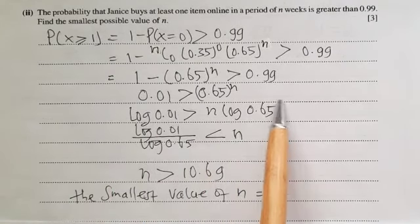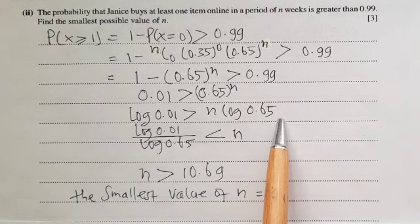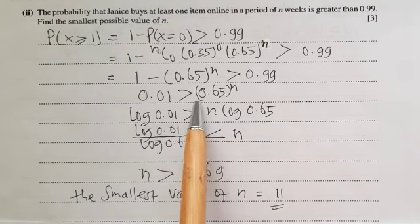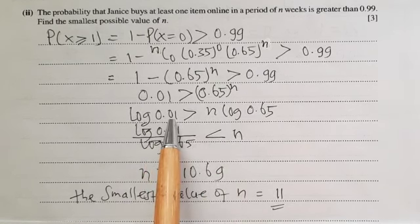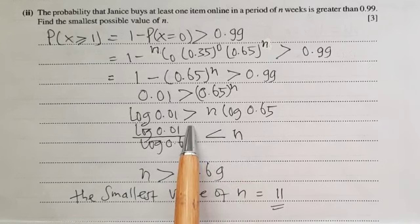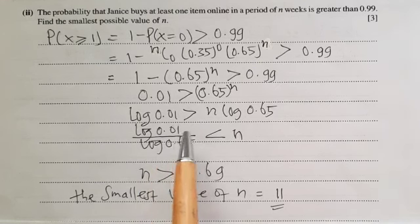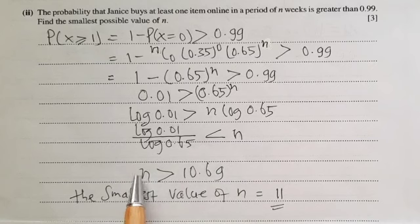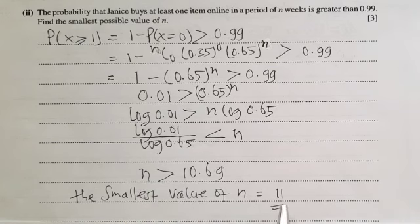Dividing both sides by log(0.65): because log(0.65) is negative, the direction of the inequality is reversed. So log(0.01) ÷ log(0.65) < n, meaning n > log(0.01) ÷ log(0.65). Evaluating this gives 10.69, so n > 10.69. The smallest integer value of n is therefore 11.